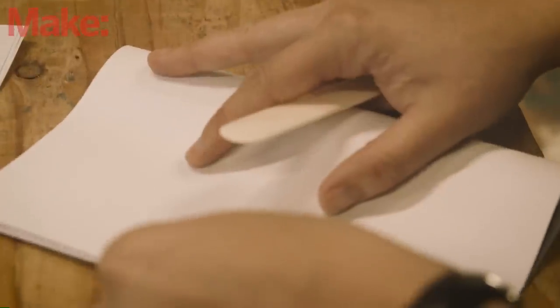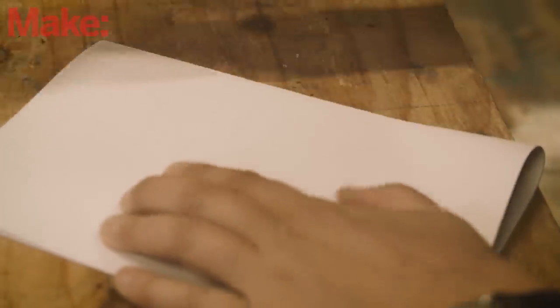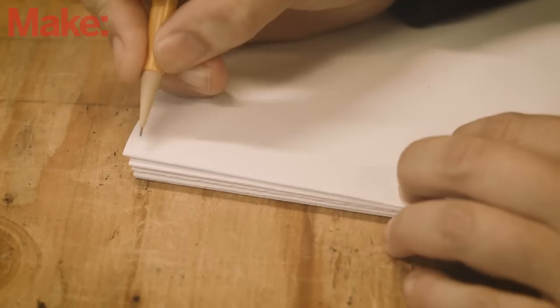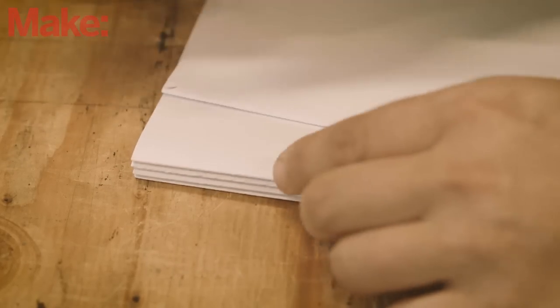Count out your pages like this and fold the pages in half with a bone folder to get a sharp edge on your signatures. Once you have folded all of your signatures, we can move on to poking the holes into the signatures.